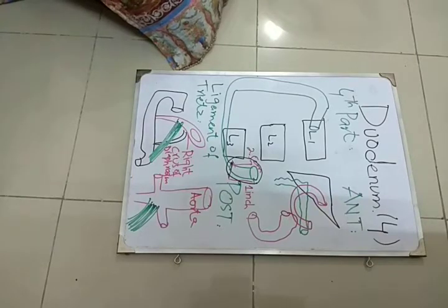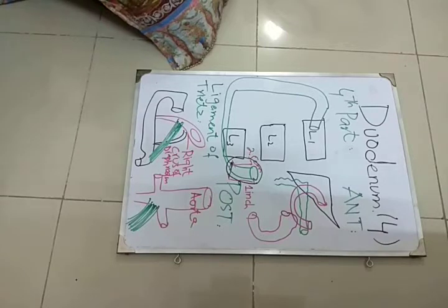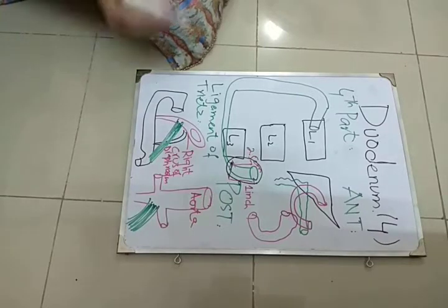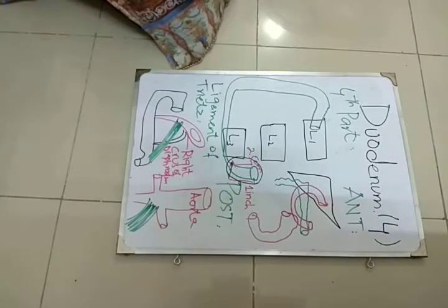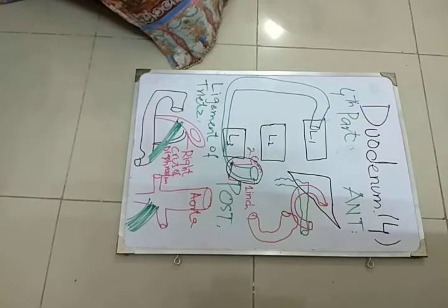And then it forms a duodenum-jejunal junction and also the duodenum-jejunal flexor. Actually, a flexor is any point in the intestine, whether it is the small or the large intestine, where the turning of the intestine occurs.